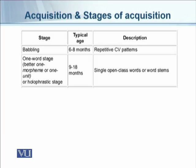The second stage is the one-word or one-morpheme stage, also called the holophrastic stage, occurring between 9 to 18 months. The child is able to use single open-class words — verbs, nouns, adjectives, adverbs — or word stems, the basic roots of words. These are the types of words used by a child during this period.